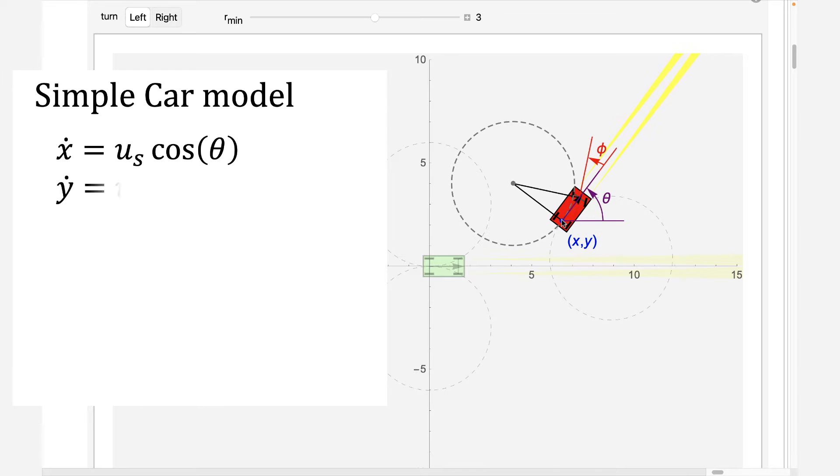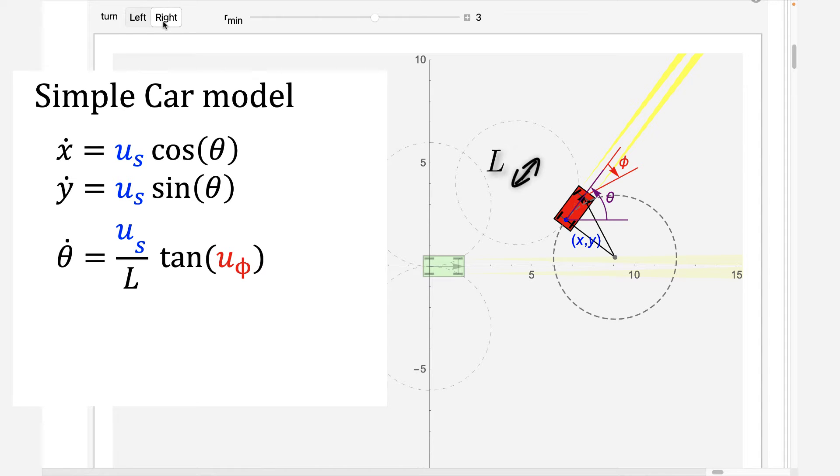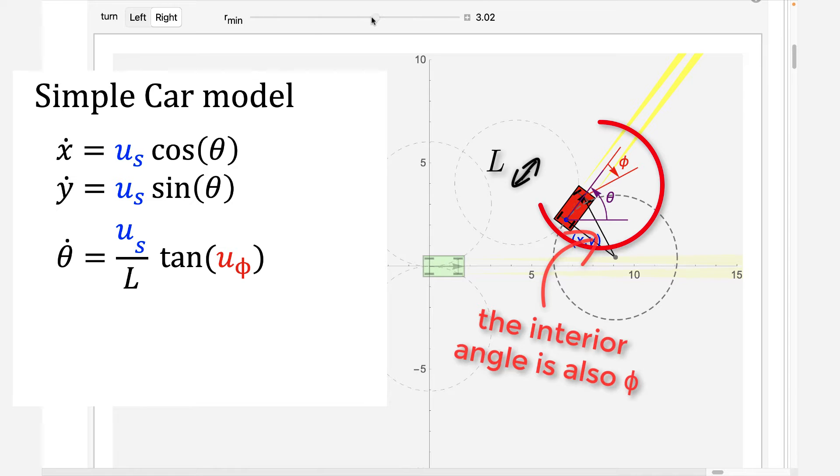The dynamic model has three equations. The control inputs are the forward speed, u-s, and the steering angle, u-phi.